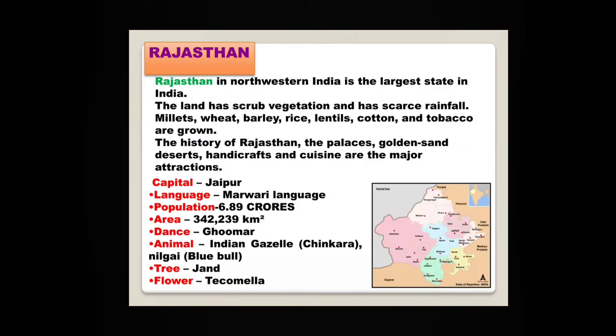Rajasthan, in northwestern India, is the largest state in India. The land has shrub vegetation and scarce rainfall. Millets, wheat, barley, rice, lentils, cotton and tobacco are grown here. The history of Rajasthan, the palaces, golden sand deserts, handicrafts and cuisine are the major attractions. The most famous Thar Desert is also situated in Rajasthan. The capital of Rajasthan is Jaipur.